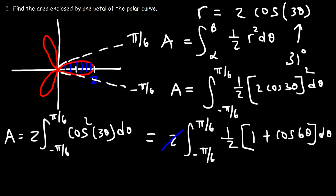For the next problem, we have r is 1 plus 2 sine theta, and we need to find the area of the inner loop. So let's begin by graphing the polar curve. The graph looks something like this — this is 1 and negative 1, this is the difference between 2 and 1, so that's 1, and 1 plus 2 is 3, so this is located at 3. Our goal is to find the area of the shaded region, basically the area of the inner loop.